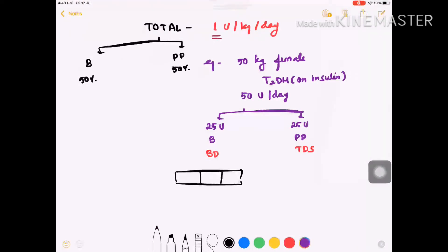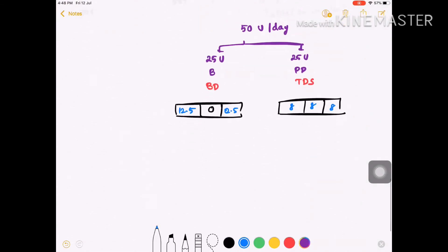Basal is given twice daily, so 25 units is split into 12.5 units morning and 12.5 units evening. Pre-prandial 25 units given three times daily becomes 8, 8, and 8 units.